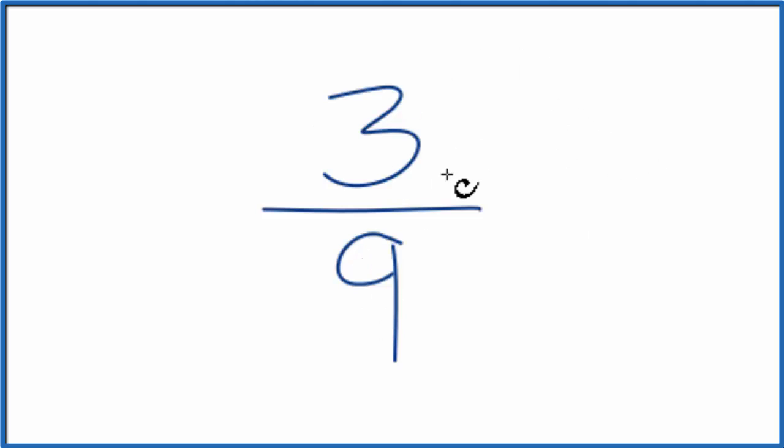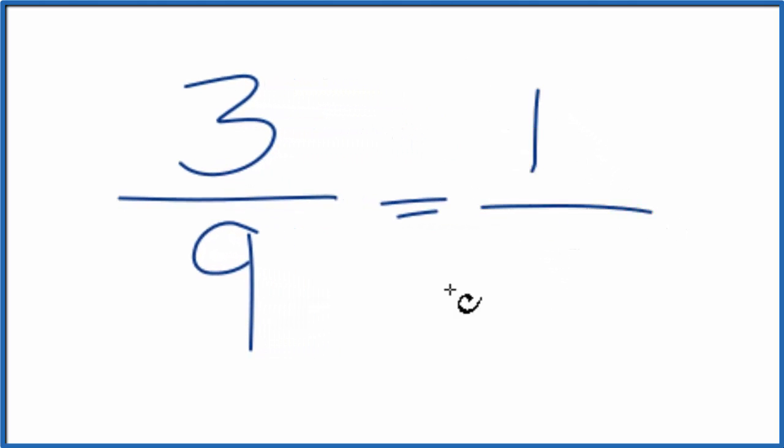So we can divide both the numerator here and the denominator by 3. That's our common factor. So 3 divided by 3, that's just 1. And 9 divided by 3, that's 3, because 3 times 3 is 9.